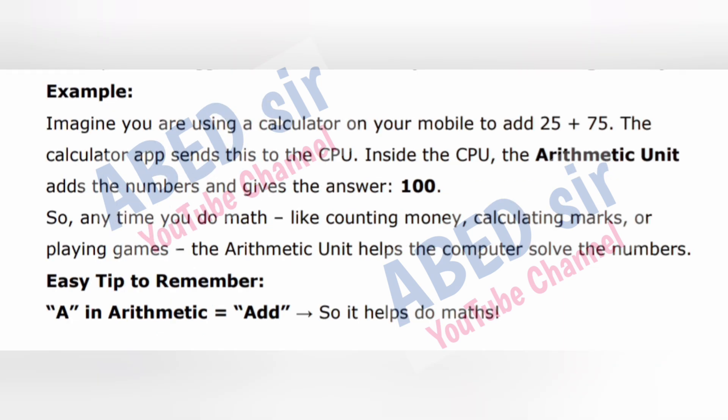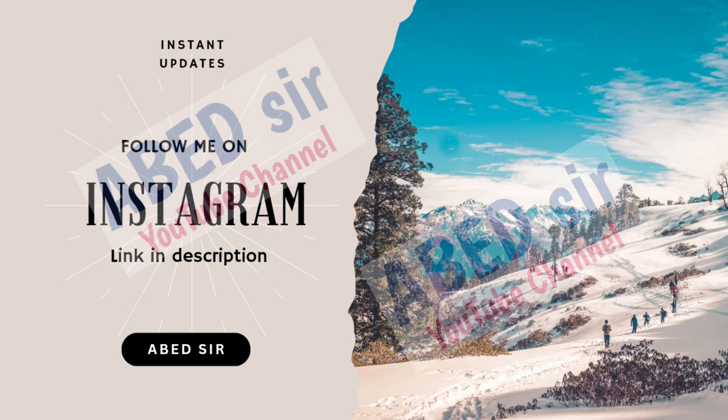Example: Imagine you are using a calculator on your mobile to add 25 plus 75. The calculator app sends this to the CPU. Inside the CPU, the arithmetic unit adds the numbers and gives the answer 100. So, any time you do math, like counting money, calculating marks, or playing games, the arithmetic unit helps the computer solve the numbers. Easy tip to remember: A in arithmetic equals add, so it helps do maths.